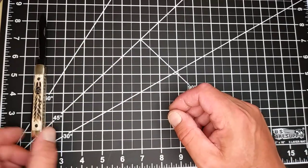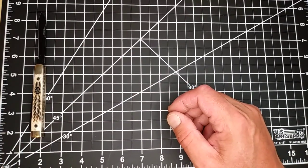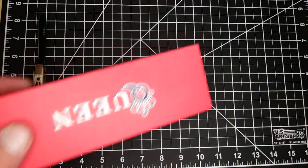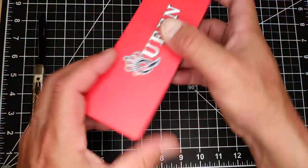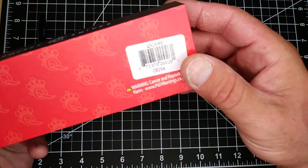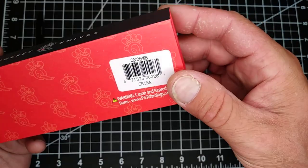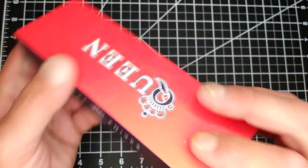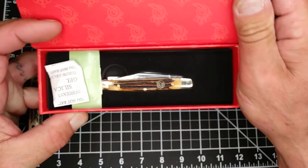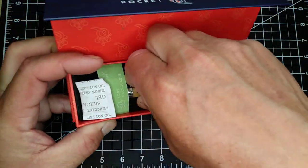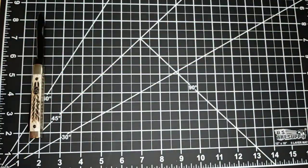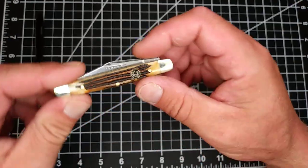Let's go into the next one, it's a Queen. This one is QN 26 WB. It is the small stockman. Thrifty Kniffy just did a review of the small stockman by Queen in the red synthetic.